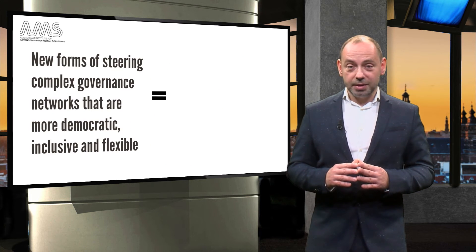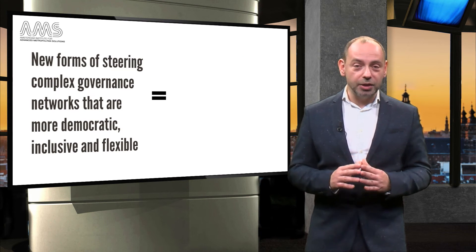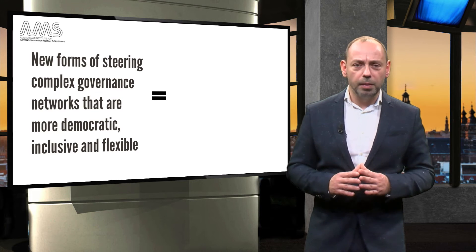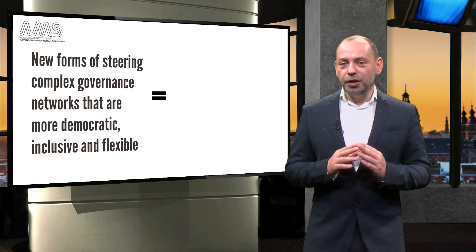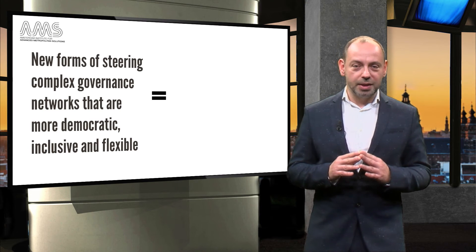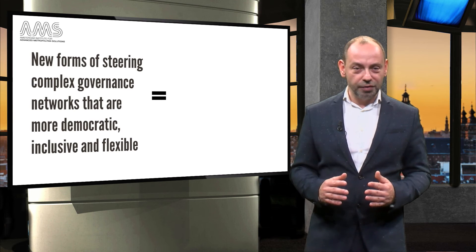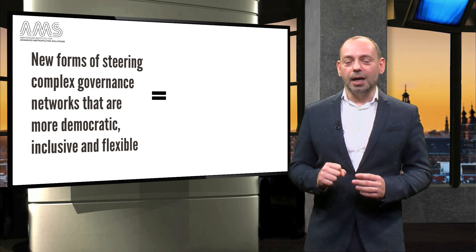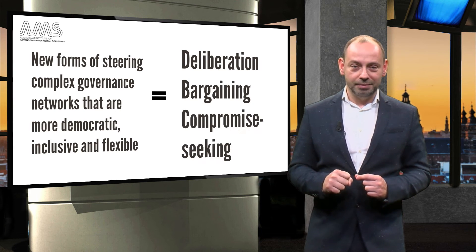This means that metropolitan innovators must adopt a new attitude towards problem-identifying and problem-solving. They must find new forms of steering complex governance networks that are more democratic, inclusive, and flexible. The key words are deliberation, bargaining, and compromise-seeking.